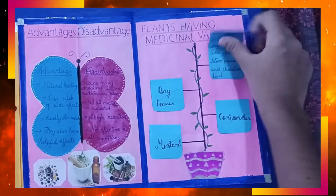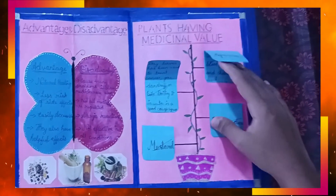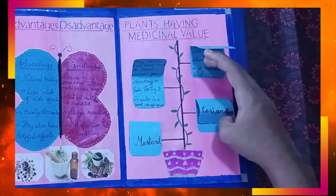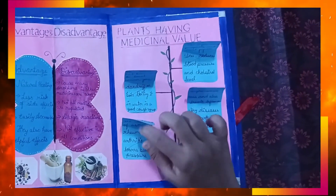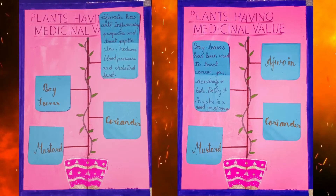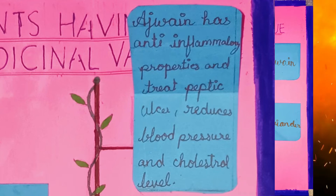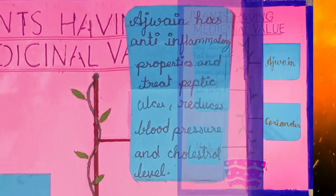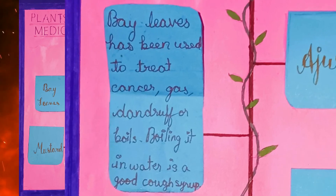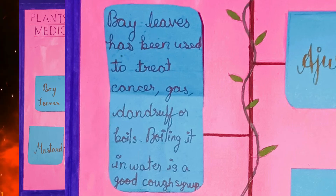Plants having medicinal value: Ajwain has anti-inflammatory properties and can treat peptic ulcers, reduce blood pressure and cholesterol levels. Bay leaves have been used to treat cancer, gas, dandruff and boils; boiling them in water makes a good cough syrup.